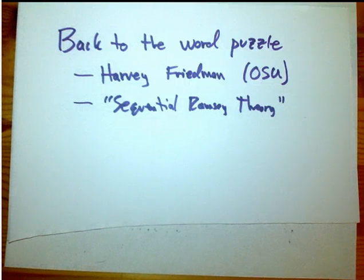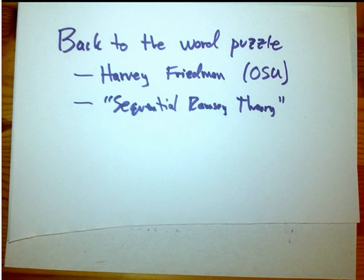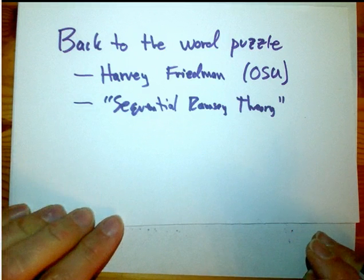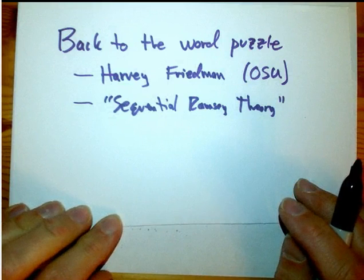Let's go back to the word puzzle that we started with a few videos ago, due to Harvey Friedman at Ohio State. You could call it sequential Ramsey theory. It's the same idea that you have some sort of structure and you allow it to grow bigger and bigger. The question is: must it always contain a certain kind of pattern? We were trying to avoid the match between simple strings, and just like Ramsey theory, the theorem is that you can't avoid it — eventually you have to have this structure.